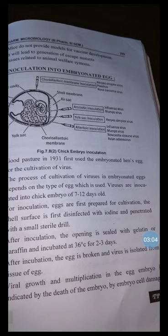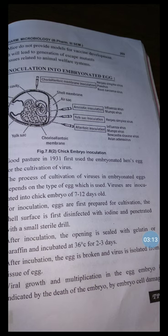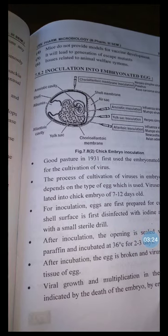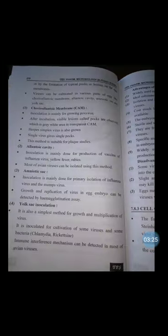After incubation, the egg is broken and virus is isolated from the tissue of the egg. Viral growth and multiplication in the egg embryo is indicated by death of the embryo, embryo cell damage, or by the formation of typical pox lesions on the egg membrane.